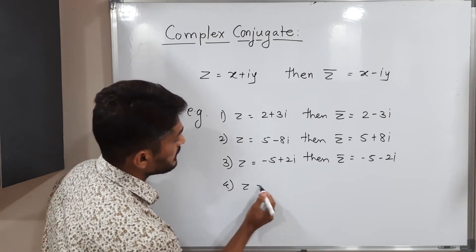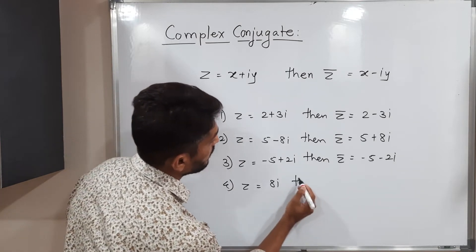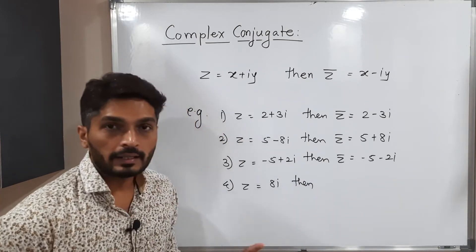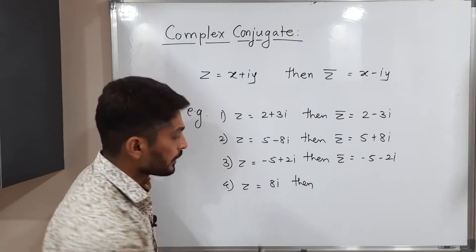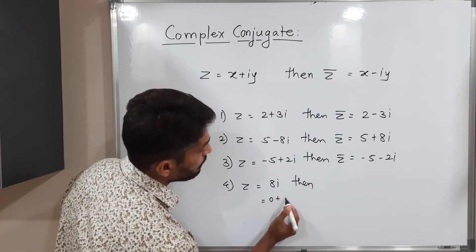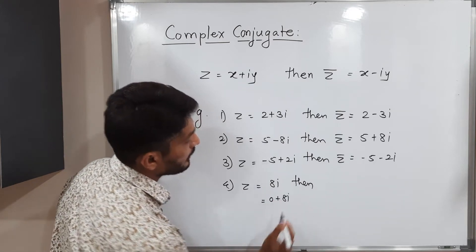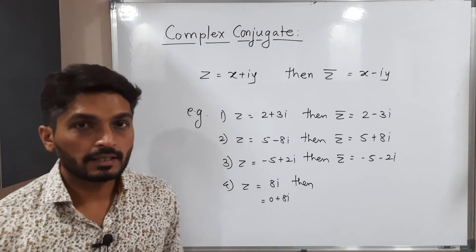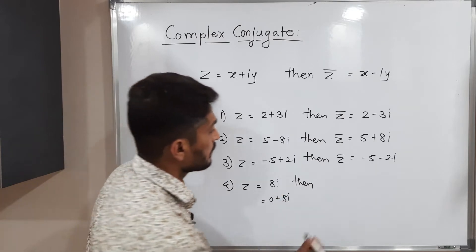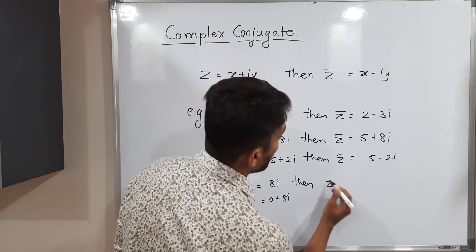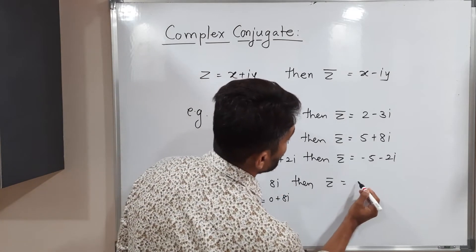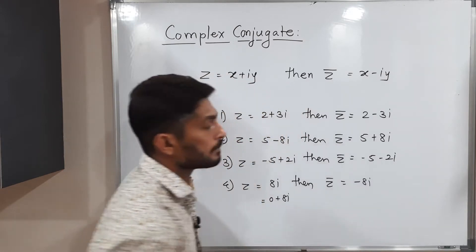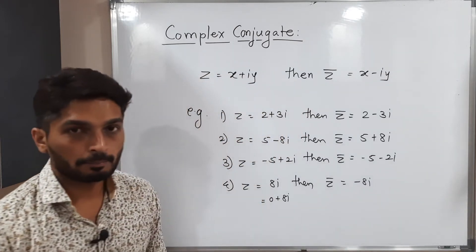If z is equal to 8i, that basically means 0 plus 8i, where the real part is 0 and the imaginary part is 8. So z-bar is equal to 0 minus 8i, which we can simply write as minus 8i.